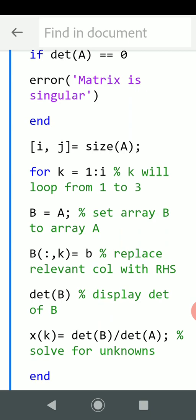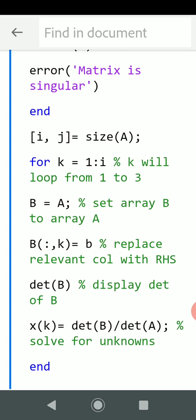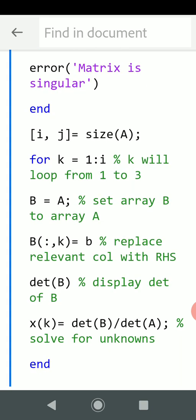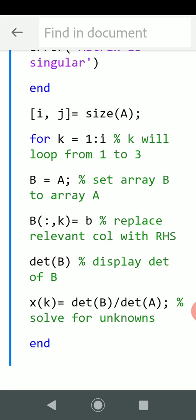Square brackets [i, j] equals size(A). That gets the size, so i is the number of rows, j is the number of columns. And that's going to be a three by three. We set up a little for loop there, so for k equals 1 to i.